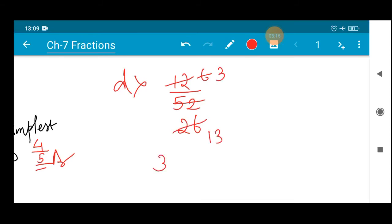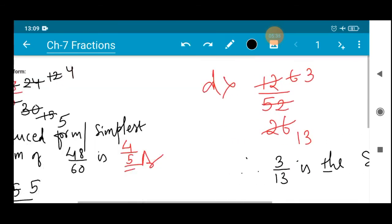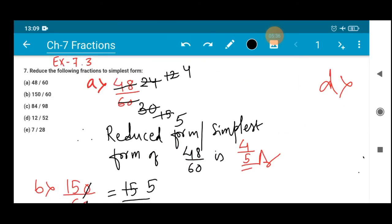Then 2 threes are 6 can be done. 2 thirteens, the 26 can be done. So 3 by 13. Therefore 3 by 13 is the simplest form of 12 by 52. After reducing, finally we got 3 by 13. Both 3 and 13 cannot be reduced further.